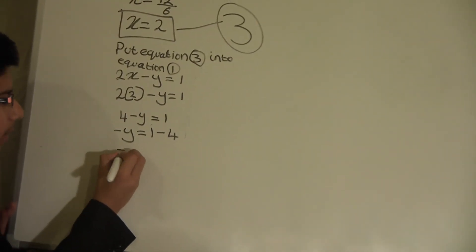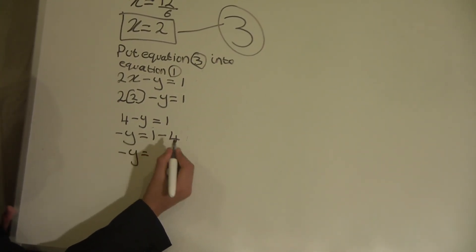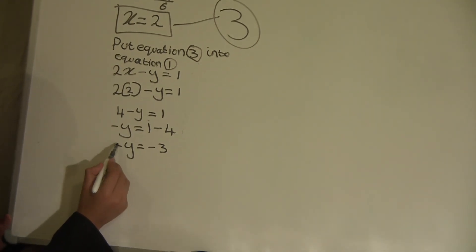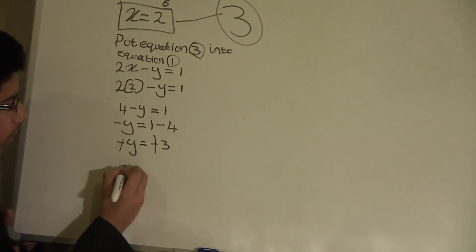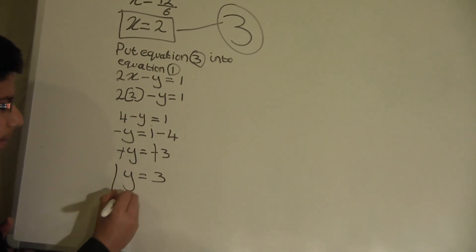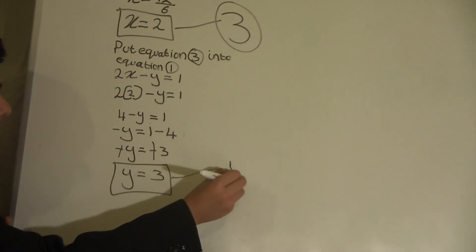And when we work that out, it is minus y equals, the sum is 1 minus 4 equals minus 3. So we will cancel these two minuses and we will write y equals 3. That will be our equation 4.